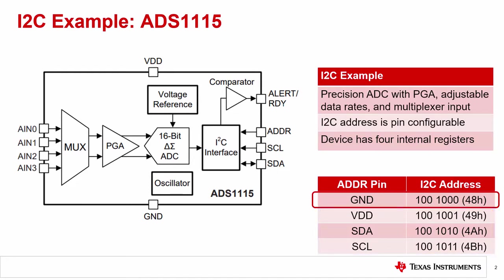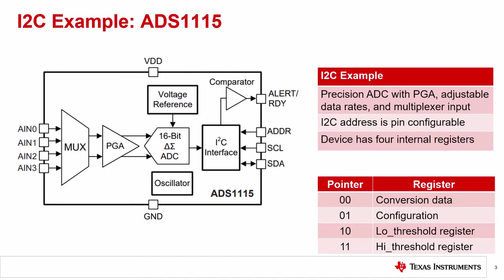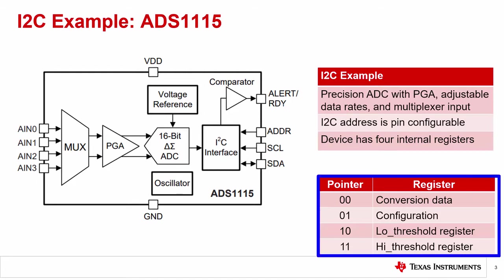For this example, we'll use the ADDR set to ground so the address is 0x48. The ADS-1115 has four internal registers, each addressed by an internal pointer register. The pointer register scheme in this example is a common method used in I2C devices with multiple registers.